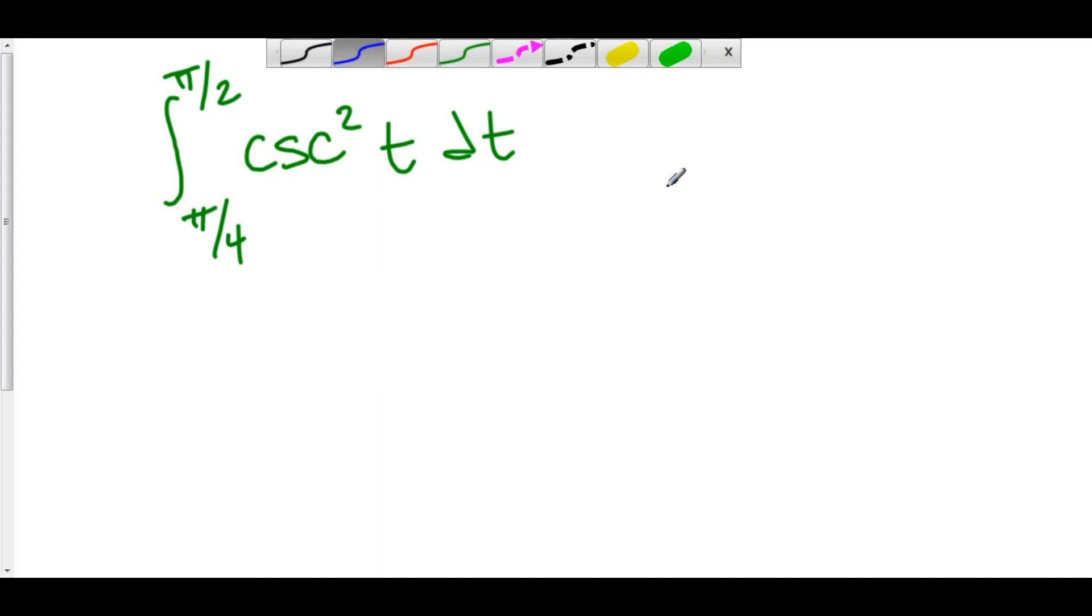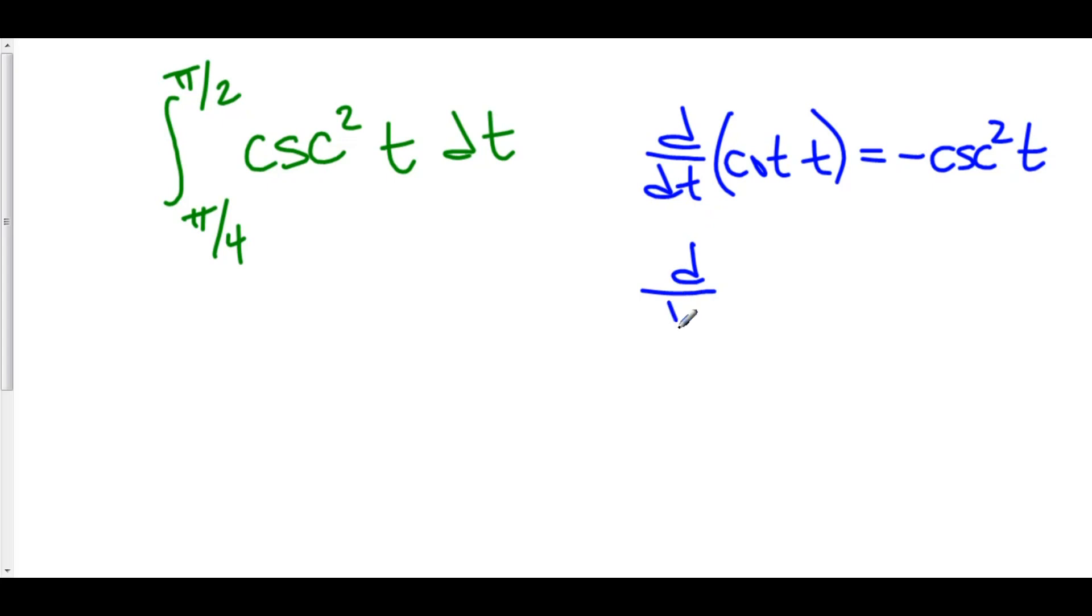Well, I know that if you take the derivative d/dt of cotangent t, this is equal to negative cosecant squared t. Now I don't have a negative here. However, if I put a negative in front of the cotangent t, things might work out. Let's try. The derivative of negative cotangent t is equal to negative negative cosecant squared t, which is positive cosecant squared t.